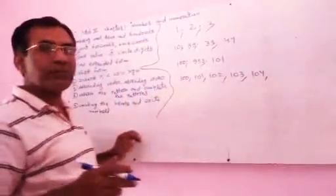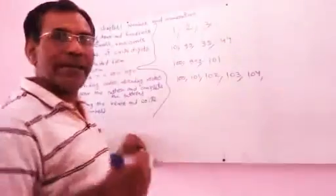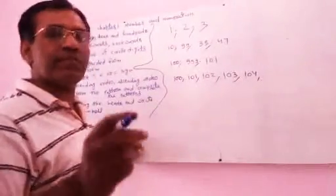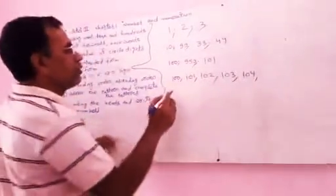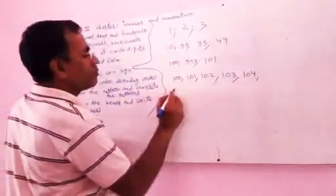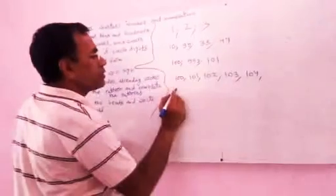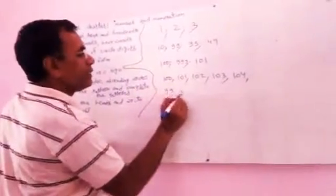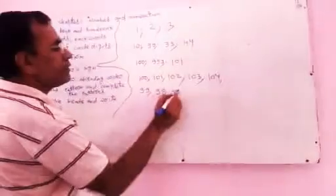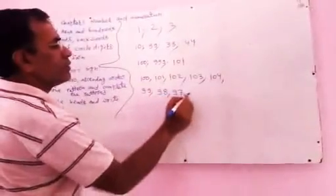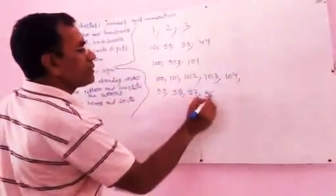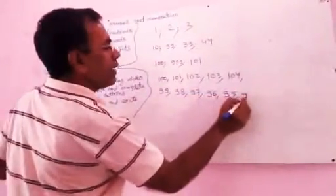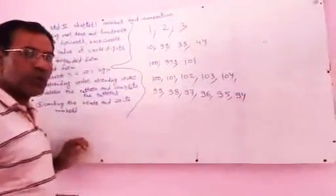Backwards means going back — you subtract 1 from each number. For example, starting from 99: then 98, then 97, then 96, then 95, then 94.